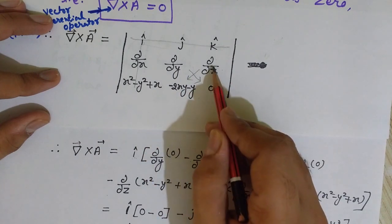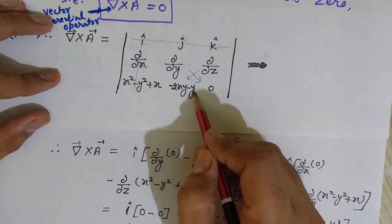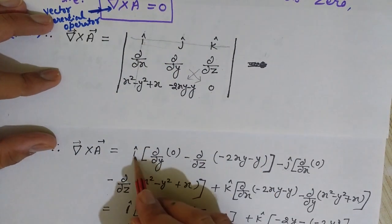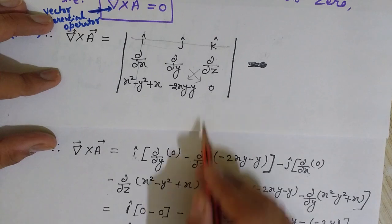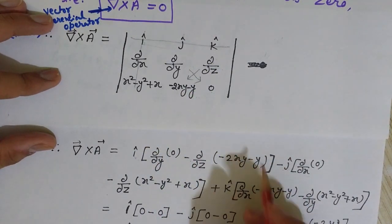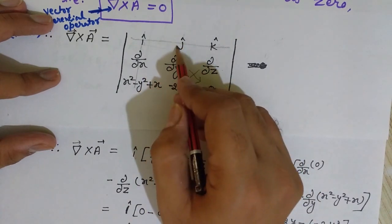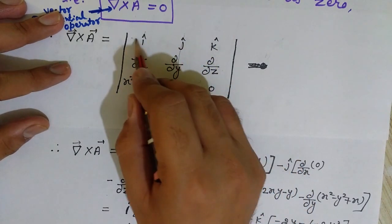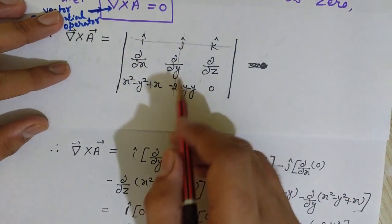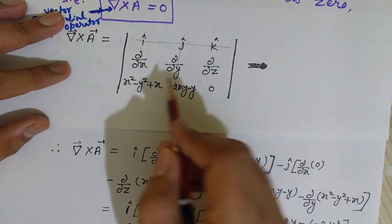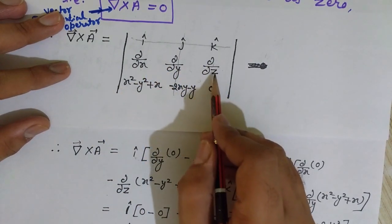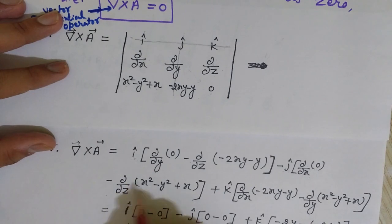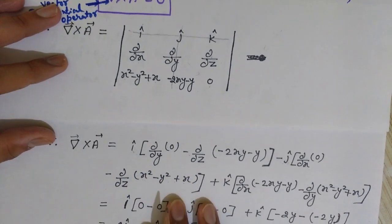For the î component: î × [(∂/∂y)(0) − (∂/∂z)(−2xy + y)]. Then minus for the ĵ component: −ĵ × [(∂/∂x)(0) − (∂/∂z)(x² − y² + x)]. We draw a line through the ĵ column and row and cross-multiply the remaining four terms accordingly.